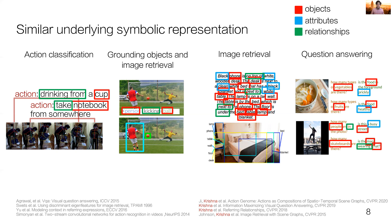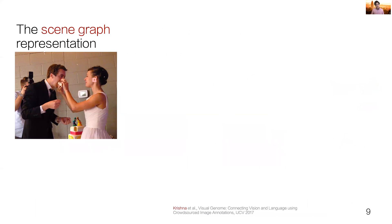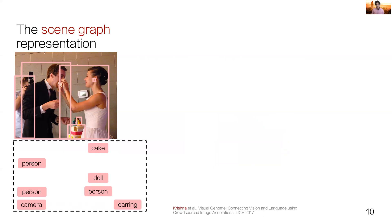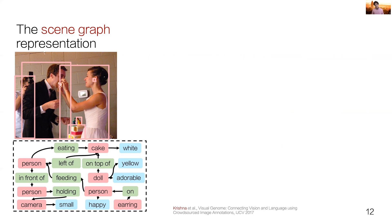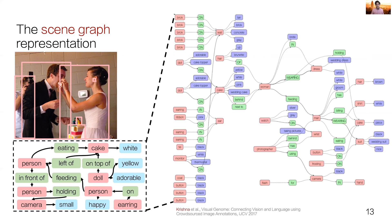Which person is kicking the ball versus which one is guarding the goal? Are you looking for an image with a blanket on top of or next to the bed? Noticing this shared underlying representation, we've formalized it as a scene graph. The scene graph representation encodes every image as a set of objects grounded as bounding boxes, as well as attributes associated with every single object, and relationships between pairs of objects. This is just a small portion of the real scene graph encoded in the Visual Genome dataset. Scene graphs are dense, structured, compositional knowledge representations that can be used to encode a variety of vision tasks.